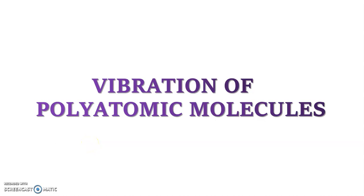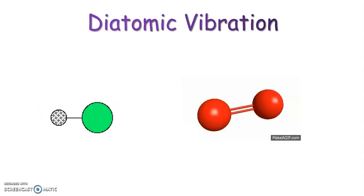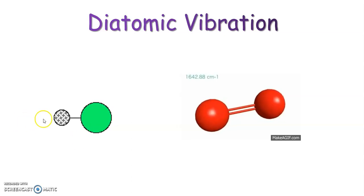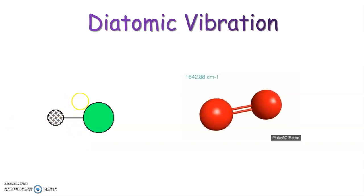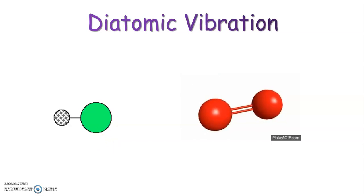Hello everyone. Welcome to the lecture of Vibrating Polyatomic Molecules. In the previous lectures of IR spectroscopy, we have discussed the spectra of diatomic molecules. However, most of the molecules that we deal with in chemistry are polyatomic. Moreover, in diatomic molecules, there is only one bond and hence there will be only one type of vibration. This is not the case for polyatomic molecules as they contain more than one bond.